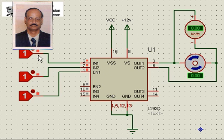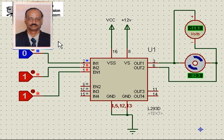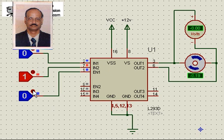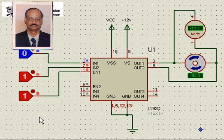Now if I make this low, the motor rotates in the other direction. So that is how we get clockwise rotation, anticlockwise rotation, and also a stop function separately, irrespective of the logic condition. For example, when I make this 0, the motor stops. It is running only when the logic is made high.